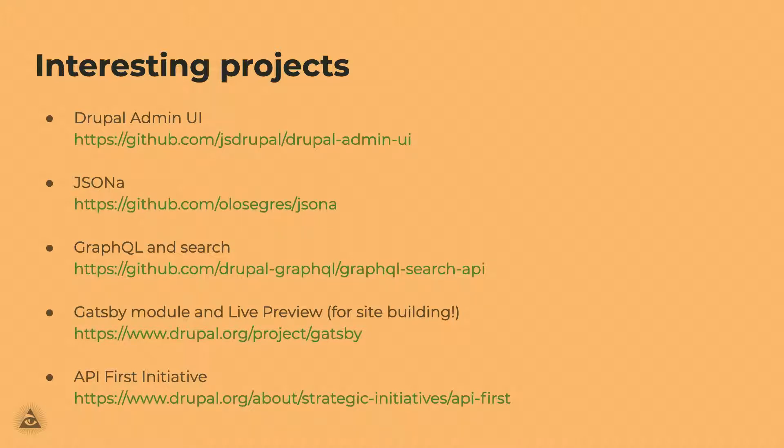From the audience: have the Gatsby folks resolved the upper limit on pages — like if you get over 500 pages it can start taking hours to rebuild the site? I personally haven't used Gatsby so I can't speak to that. There's also a question about custom modules and whether there's a place the community can check out some of what's been built since we're all hitting some of the same problems.